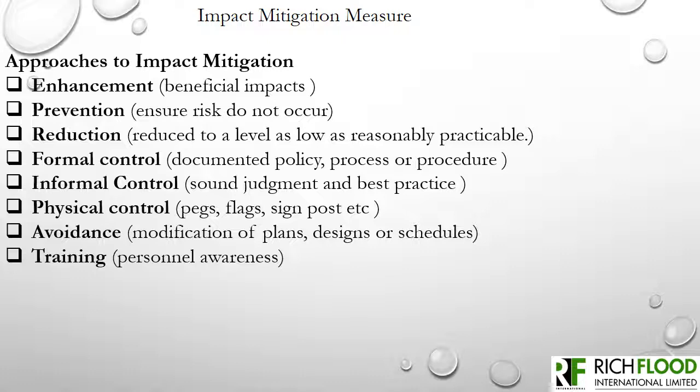Enhancements are measures designed to ensure that significant beneficial impacts of the proposed project's existing facilities are encouraged and improved upon. Prevention involves measures to ensure that significant adverse potential impacts and risks do not occur. Reduction involves measures to ensure that the effects of significant impacts that cannot be prevented are reduced to as low as reasonably practicable (ALARP). Formal control involves the application of documented policies, processes, or procedures in mitigating the impacts of project activities.